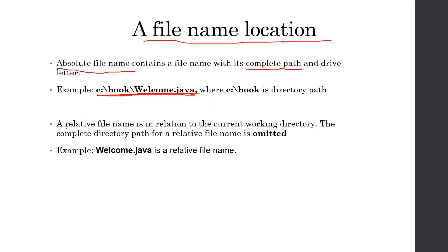The second way is to use the relative name. The relative name is used when the file is located in our current directory. When we write the relative file name, we can omit the directory path. For example, if welcome.java is located in our current directory, we can just write the name of the file. Both ways are valid — it all depends on your conditions. If you don't know the full path name, you can just use the relative file name.